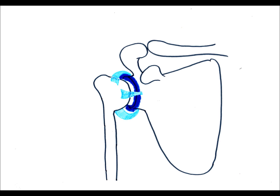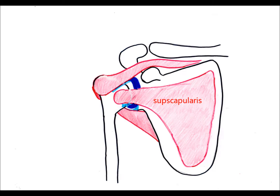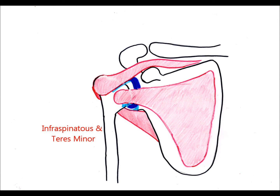The glenoid is deepened by the labrum, the circular ligament shown here in dark blue. The glenohumeral joint is also surrounded by the light blue capsular ligaments. The joint receives additional support from rotator cuff muscles that ensure that the ball remains in the socket during movement.